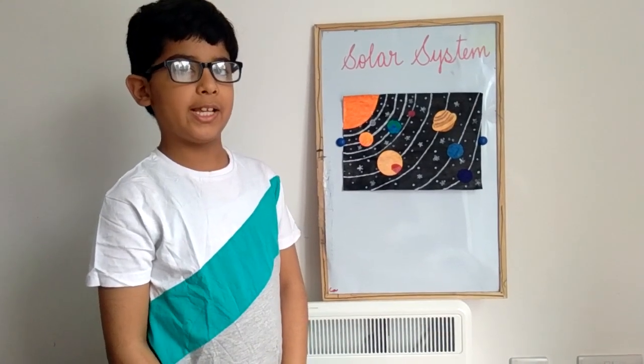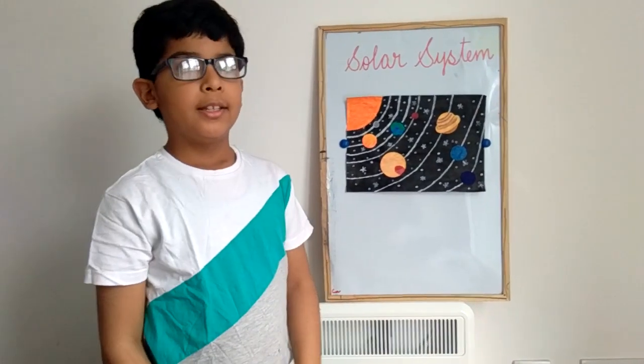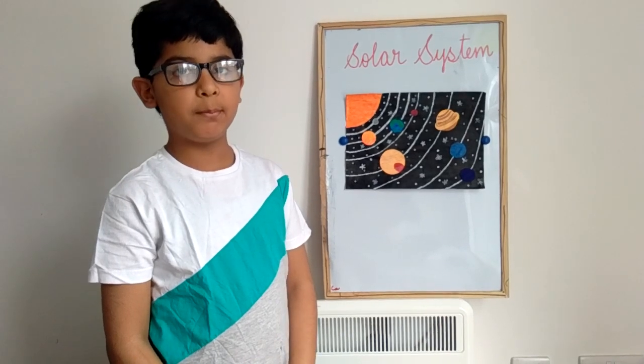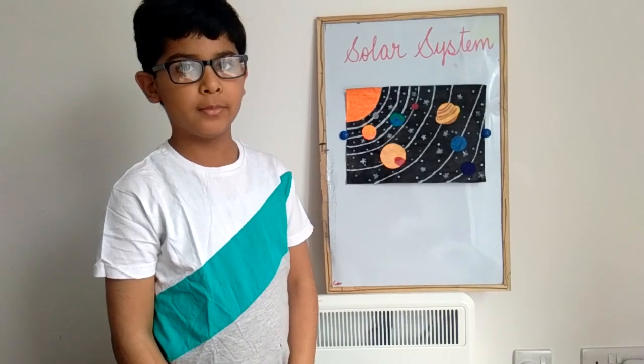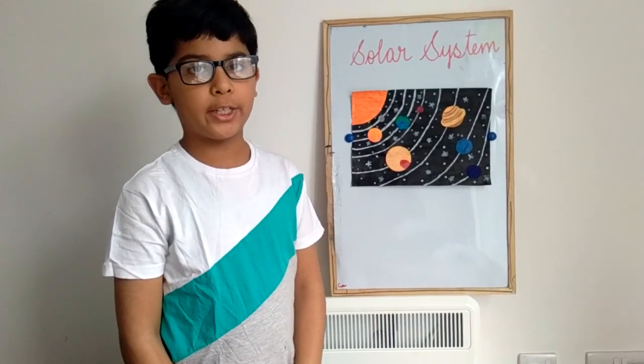The next planet is Neptune. Neptune has 14 moons. It is the smallest planet in the outer planets. Thank you for watching my video.